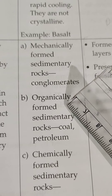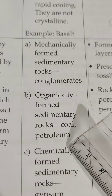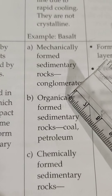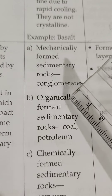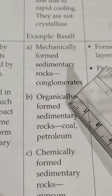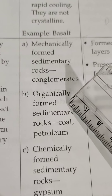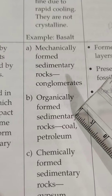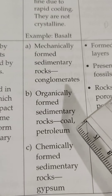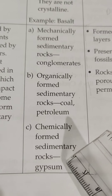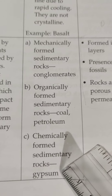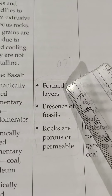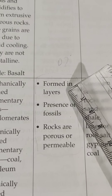Organically formed sedimentary rocks include coal and petroleum. The word organic is related to living things — when plants and animals get buried under the surface of the earth, due to tremendous pressure and temperature they change into coal and petroleum. Chemically formed sedimentary rocks, like gypsum, are generally formed in layers, which is why they are called sedimentary rocks.